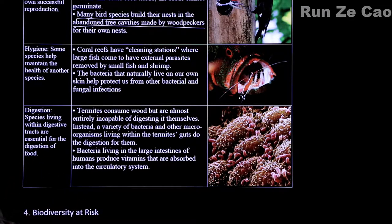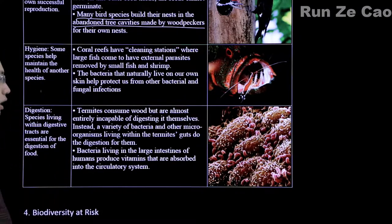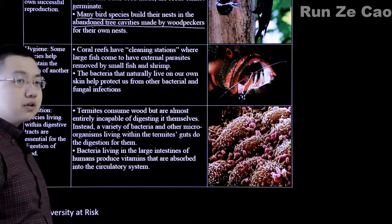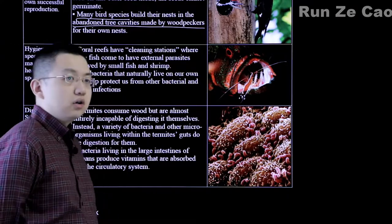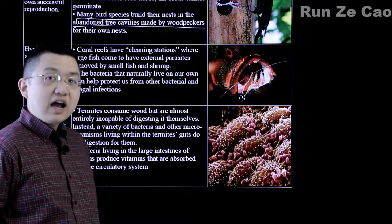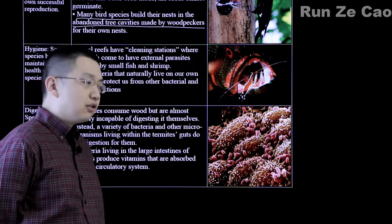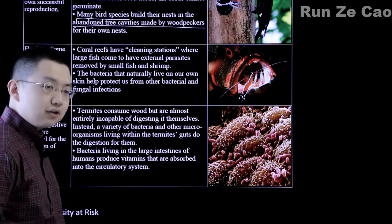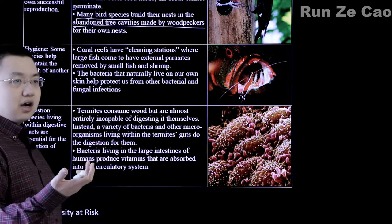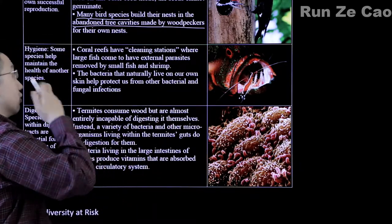In the large intestines of humans, certain vitamins are produced by bacteria and absorbed by the large intestine's walls. In other animals, the large intestine can absorb other nutrients. Horses, unlike cows, have hindgut fermentation — it is in the large intestine that cellulose is broken down by symbiotic bacteria, which give off volatile fatty acids such as propionic acid, then absorbed by the walls of the intestine and put to use by the horse.